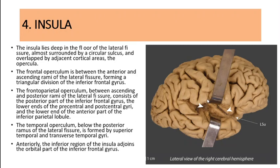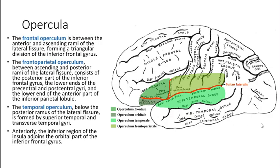As you can understand, corresponding parts of whichever lobe they come from, that's how the frontal operculum, frontoparietal operculum, or temporal operculum got their names. The temporal operculum, below the posterior ramus of the lateral fissure, is formed by the superior temporal and transverse temporal gyri. Anteriorly, the inferior region of the insula adjoins the orbital part of the inferior frontal gyrus.